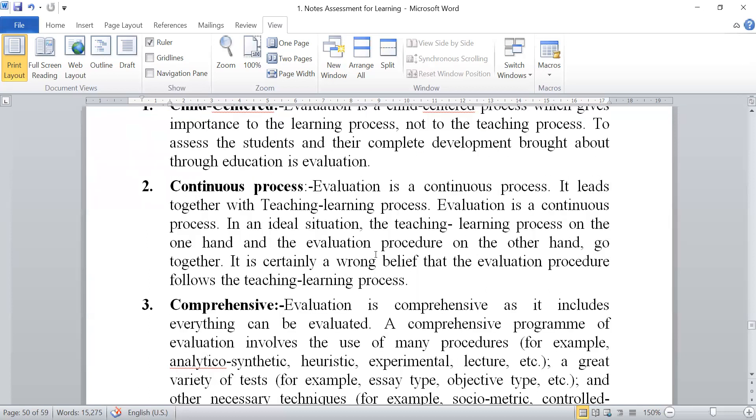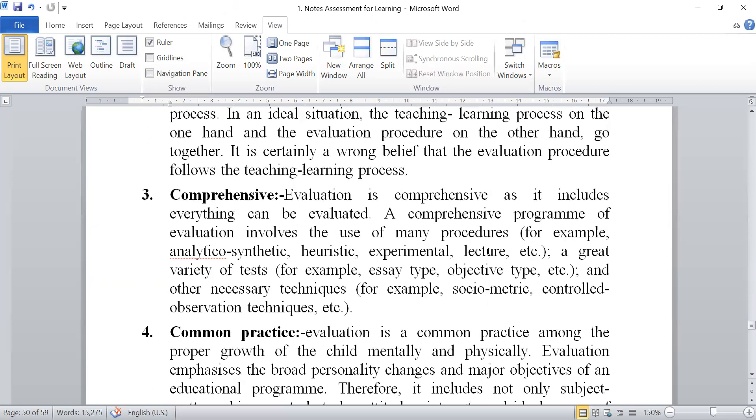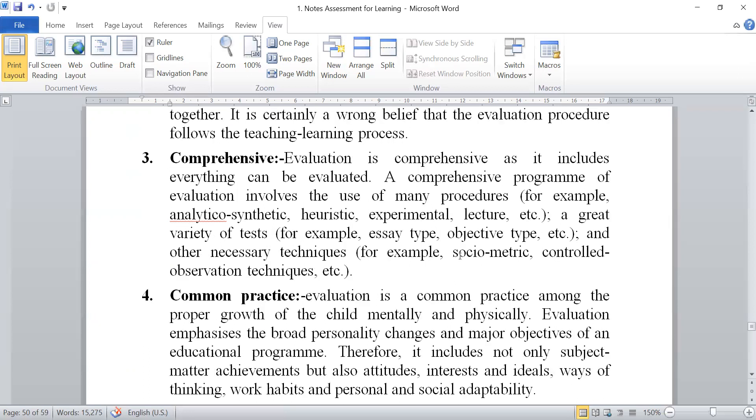Second, continuous process. Evaluation is a continuous process if it leads together with teaching learning process. Evaluation is a continuous process. In an ideal situation, the teaching learning process on the one hand and the evaluation procedure on the other hand go together. It is certainly a wrong belief that the evaluation procedure follows the teaching learning process. Next is comprehensive. Evaluation is comprehensive as it includes everything that can be evaluated. A comprehensive program of evaluation involves the use of many procedures, for example analytical, synthetic, heuristic, experimental, lecture, etc. A great variety of tests, for example, effective type, objective type, etc. and other necessary techniques, for example social matrix, controlled observation techniques.